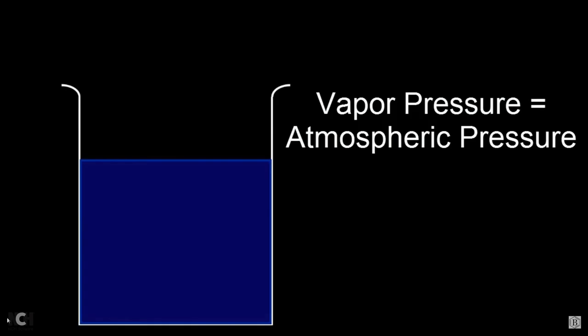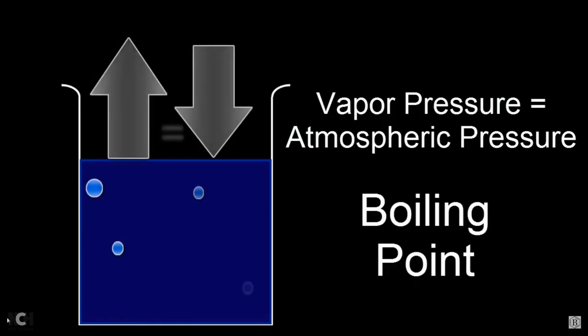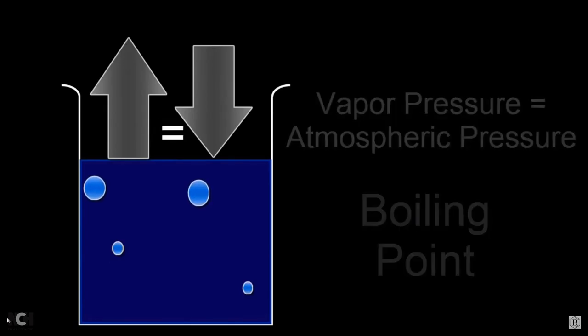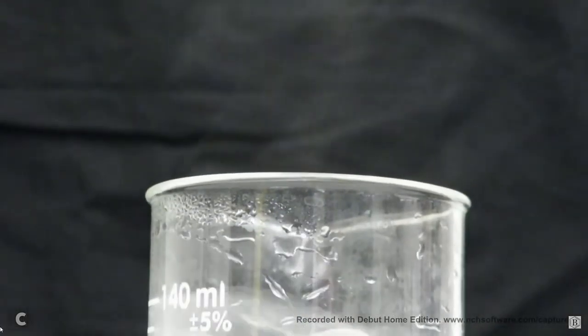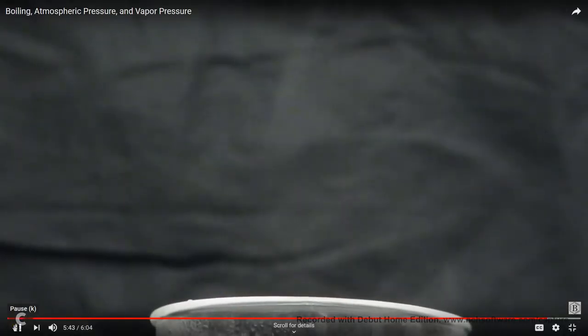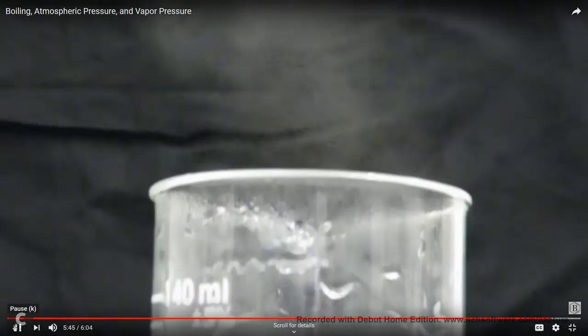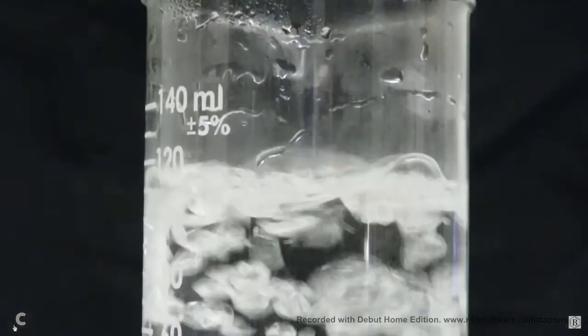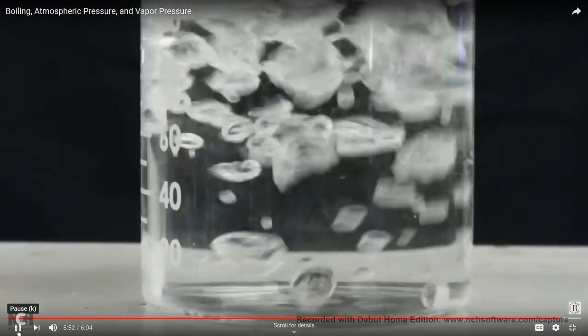We can make boiling happen by either increasing the vapor pressure or decreasing the atmospheric pressure. Either way, once the vapor pressure and the atmospheric pressure are equal, we've reached the boiling point and boiling can begin. Different substances have different vapor pressures, and therefore they have different boiling points. This has to do with how strongly the molecules are attracted to each other in the liquid. The more strongly they're attracted, the less the vapor pressure, and it's more difficult to boil — therefore, the higher the boiling point.